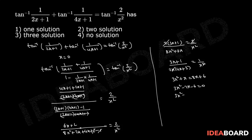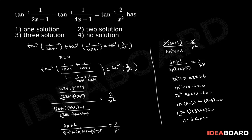Therefore 3x square minus 9x plus 2x minus 6 equals 0. This implies 3x(x minus 3) plus 2(x minus 3) equals 0, which implies (x minus 3)(3x plus 2) equals 0. Therefore x equals 3 or x equals minus 2 by 3. Combined with x equals 0, the given equation has three solutions. Therefore option 3 is the correct option.